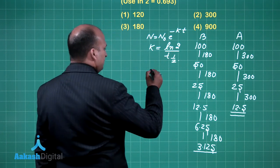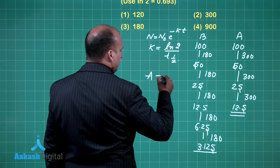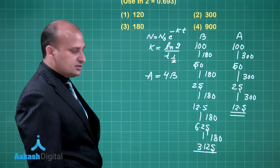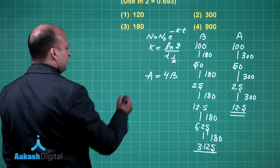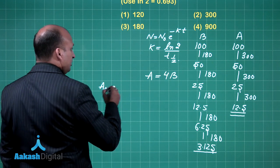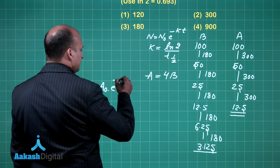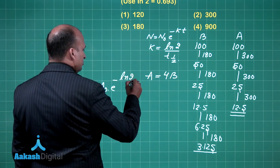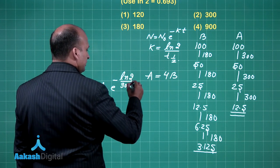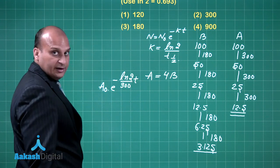Now what is the option given to us? We are given that A is 4 times of B, initial concentration is same. So I am writing it out for A first, this is A naught e raise to power minus ln 2 by T half is given to be 300 into T, agreed.